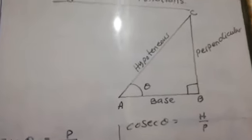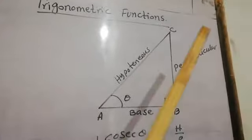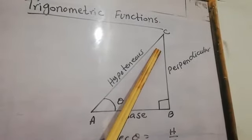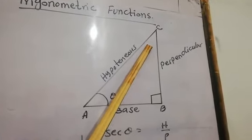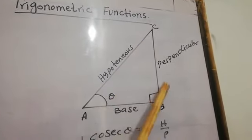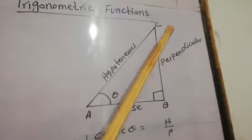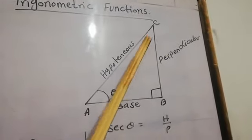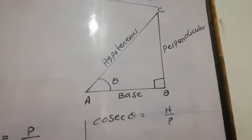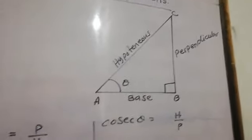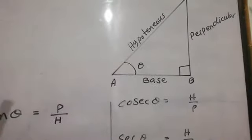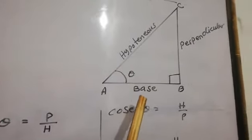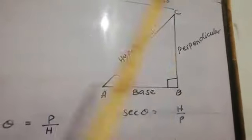Suppose if we are going to discuss about angle C, our discussion is about angle C. So this will become the base, and the side opposite to this angle is known as the perpendicular. But in this question, we will discuss about theta, so this is the base and this is the perpendicular.